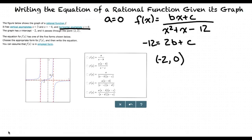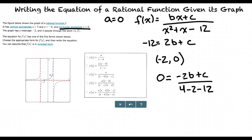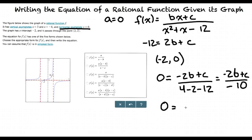Now we're going to use the x-intercept. This means f(x) equals 0 and x equals negative 2. When we plug in these values, we get 0 equals (negative 2b plus c) divided by (4 minus 2 minus 12), which simplifies to (negative 2b plus c) divided by negative 10. Multiplying both sides by negative 10, we get 0 equals negative 2b plus c.